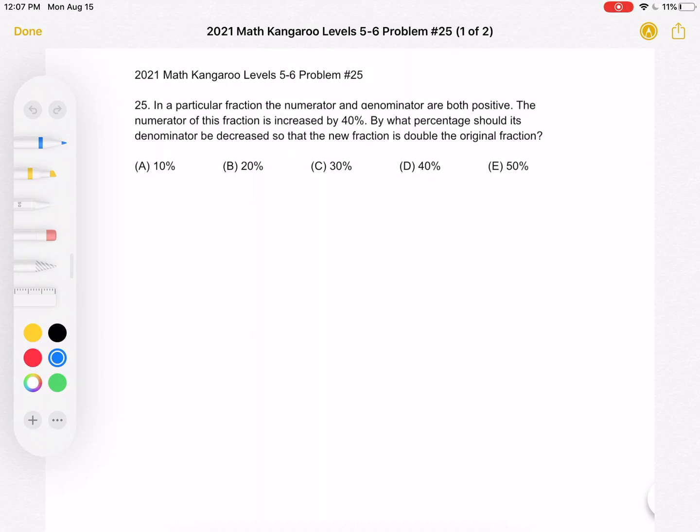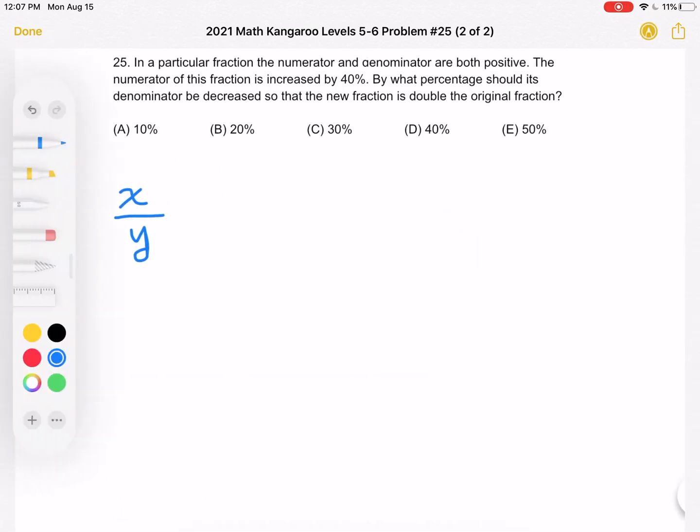A, 10%, B, 20%, C, 30%, D, 40%, or E, 50%. This is the problem as it originally appeared on the test. And here is where we'll be doing the solution.